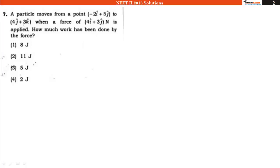How much work has been done by the force? We know that force and work relation is work done is equal to force dot displacement. And displacement we can find using final position minus initial position.